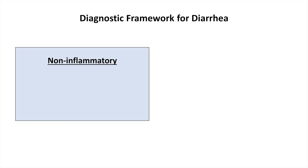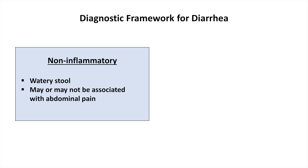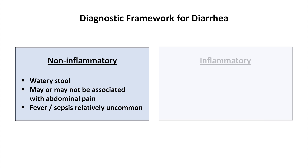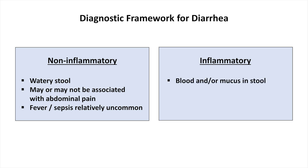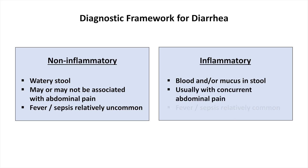Non-inflammatory diarrhea consists of watery stool, which may or may not be associated with abdominal pain. Fever and sepsis are relatively uncommon. In contrast, inflammatory diarrhea is likely present if the stool has gross blood or mucus. Inflammatory diarrhea usually presents with concurrent abdominal pain, and fever and/or signs of sepsis are relatively common.